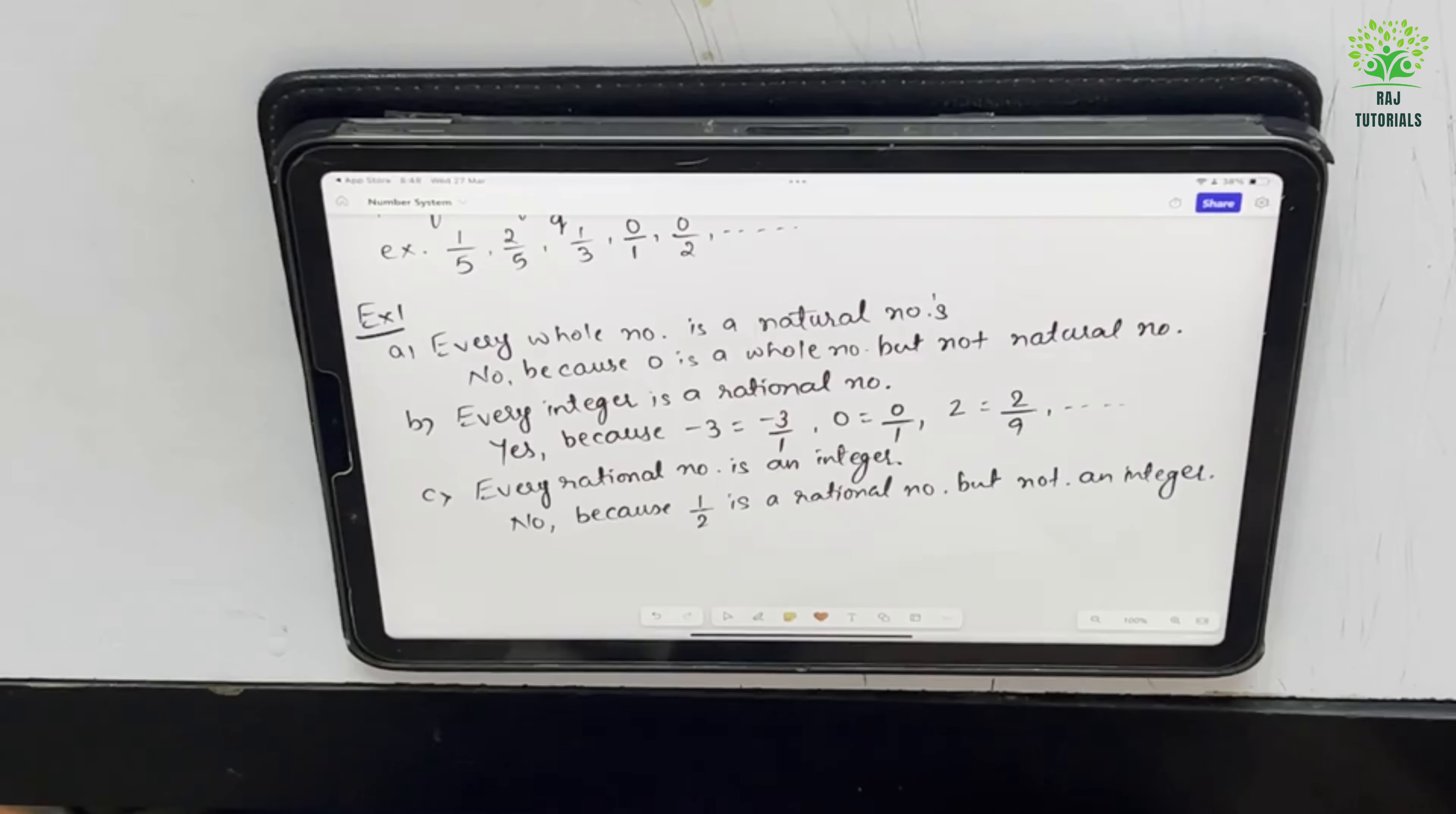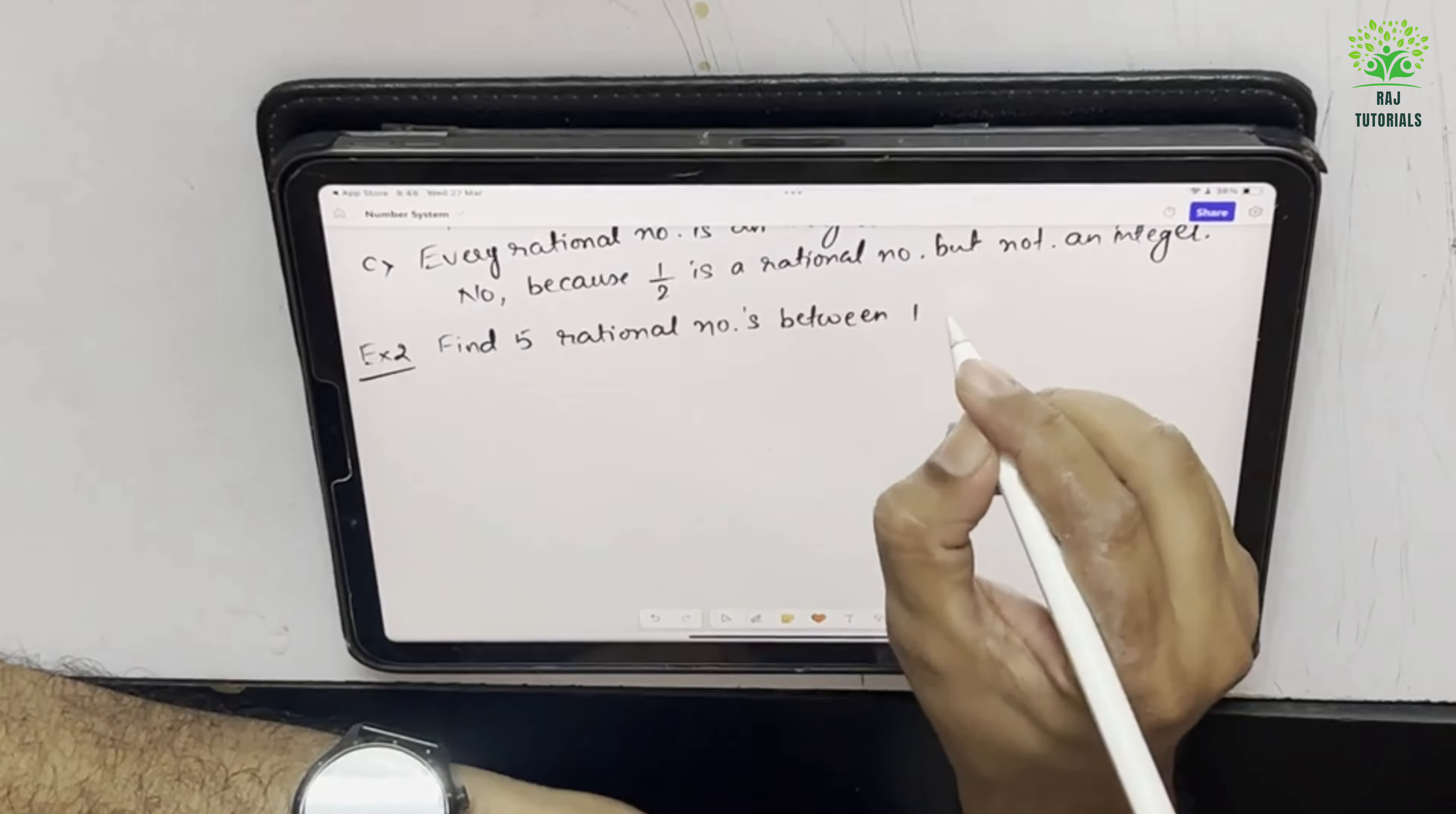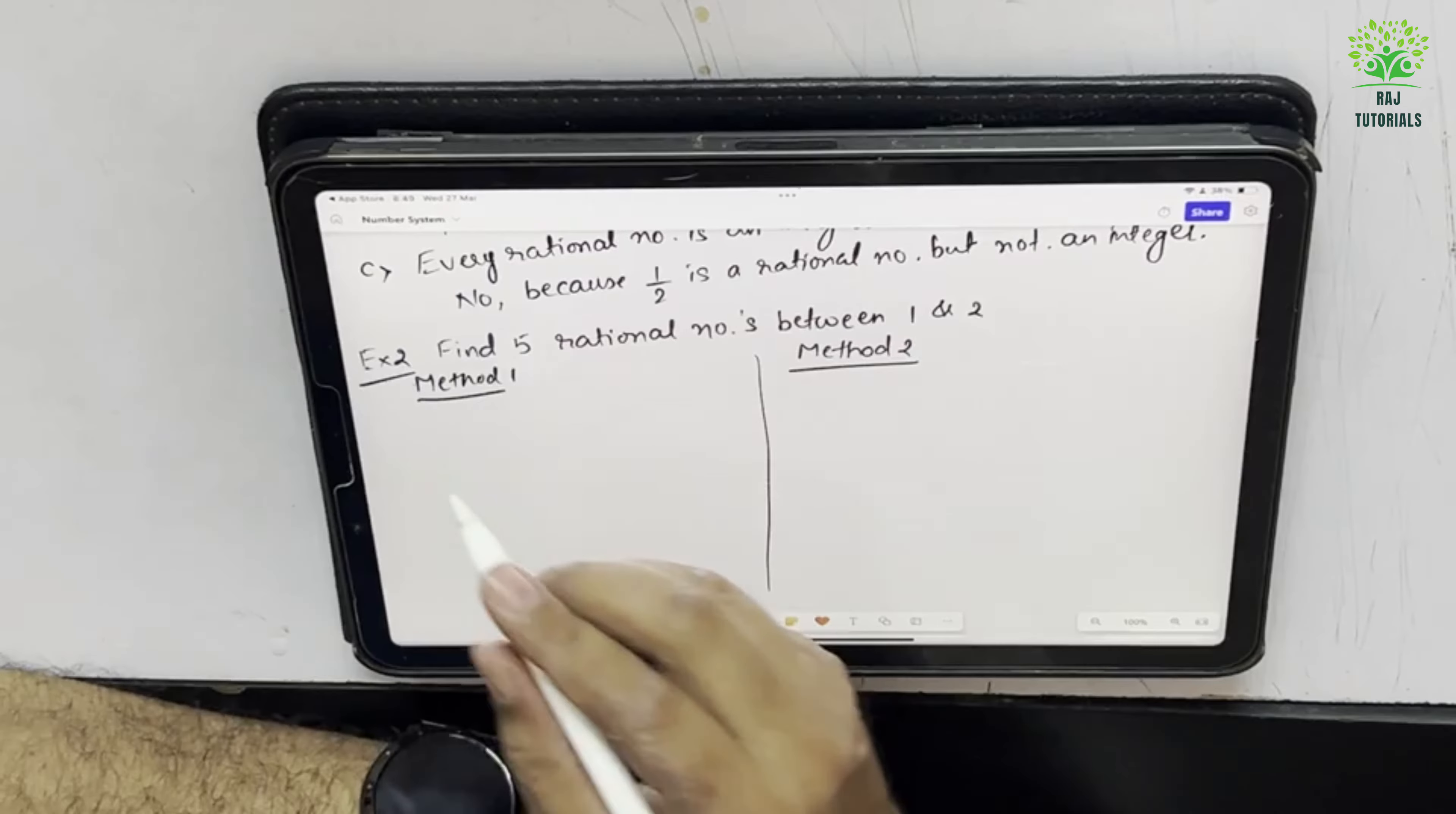Now moving ahead. Example 2 says find 5 rational numbers between 1 and 2. To get the answer there are 2 methods. Method 1 that is of textbook and the other method is an easy method. So both the methods I am showing you and you can use any one method.